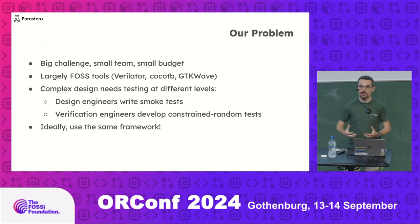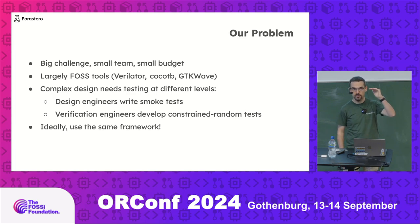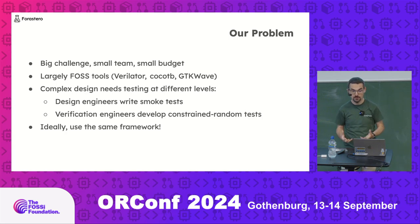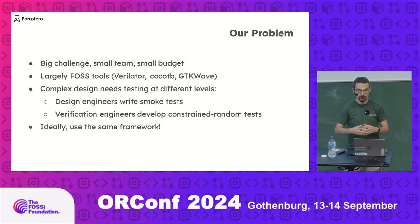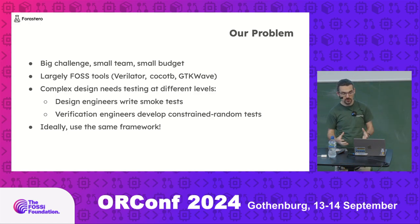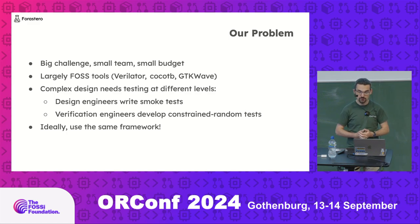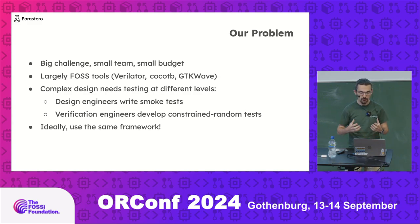Our problem is a really big challenge. We're building everything from a CPU and a completely custom memory system all the way up to a CPython runtime. We have a small team and a relatively small budget. We're largely using free and open source tools: Verilator, CocoaTB, GTKWave. Our design complexity is building really quickly, and we need design engineers building robust smoke tests, while verification engineers push further into constrained random test cases — ideally using the same test framework and libraries. CocoaTB gives us a great foundation, but we needed something more.